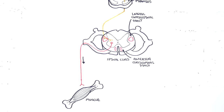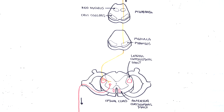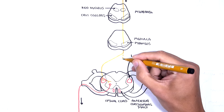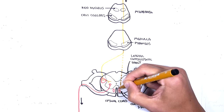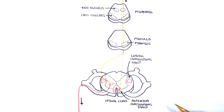Majority of upper motor neurons are contained in the lateral corticospinal tract. However, there are those that project to the proximal muscles, and these have axons that do not cross over at the medulla, but actually travel in the anterior corticospinal tract in the spinal cord. Axons of the anterior corticospinal tract will cross over when they reach the level of the spinal cord, where they will form synapses with the lower motor neurons.